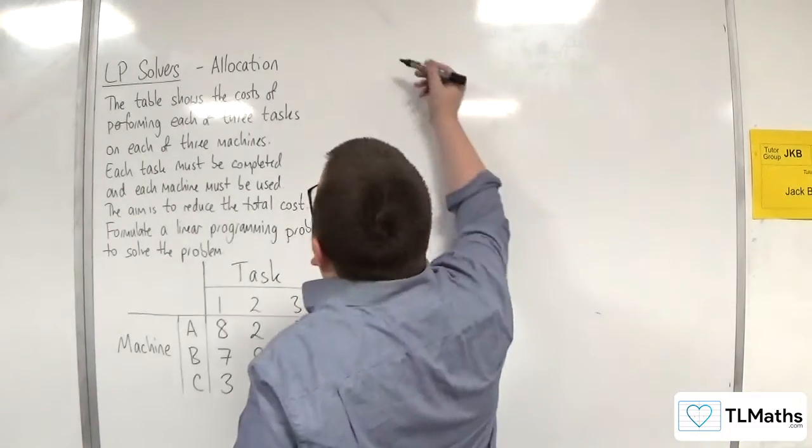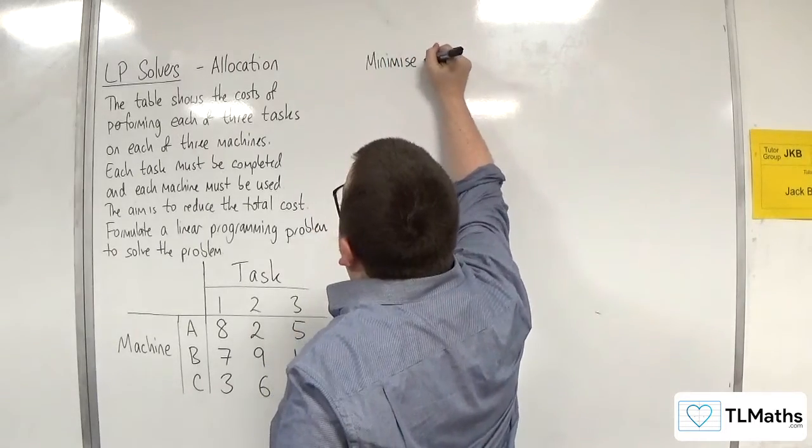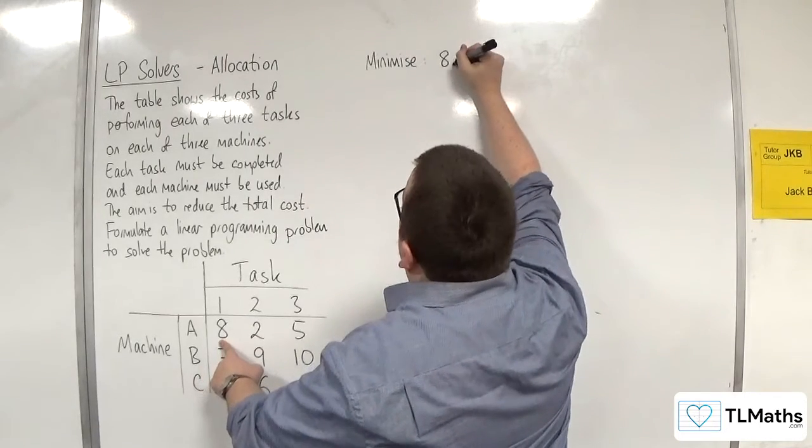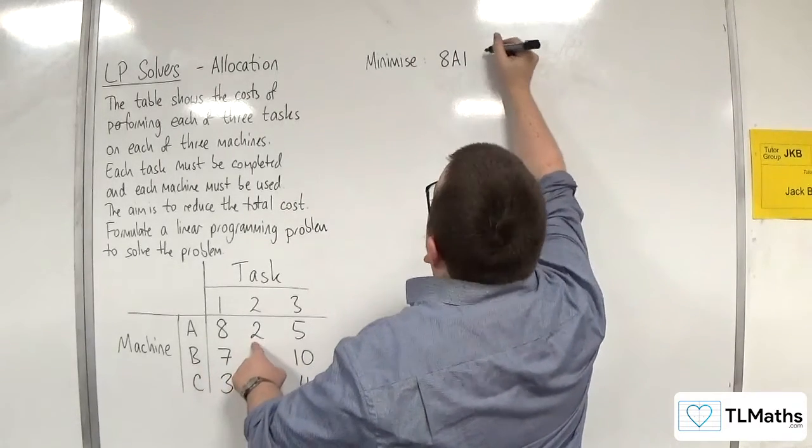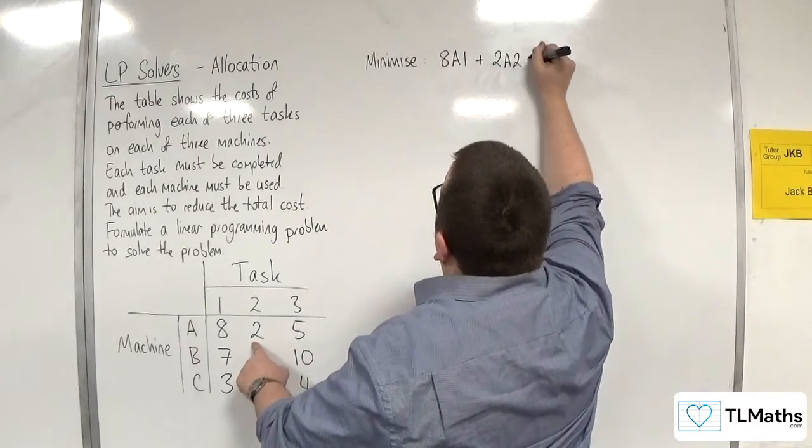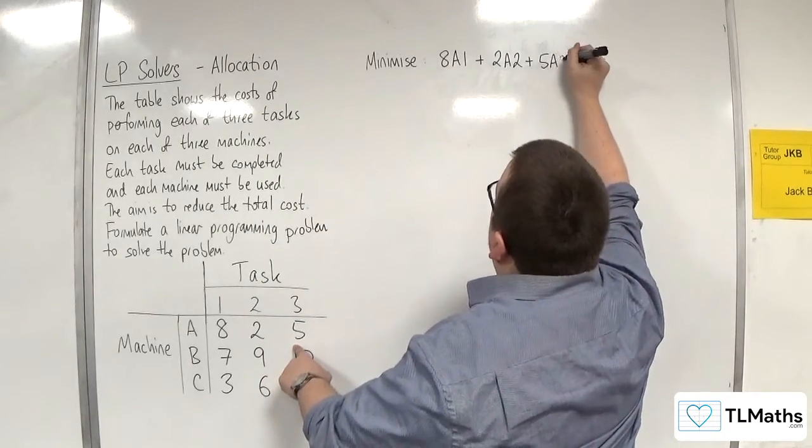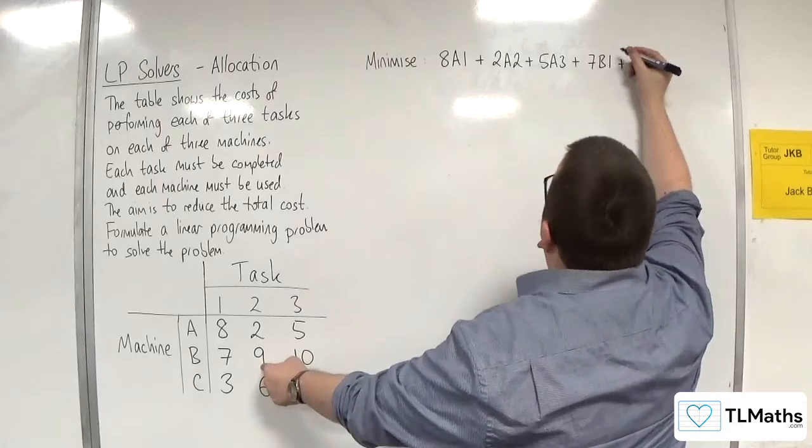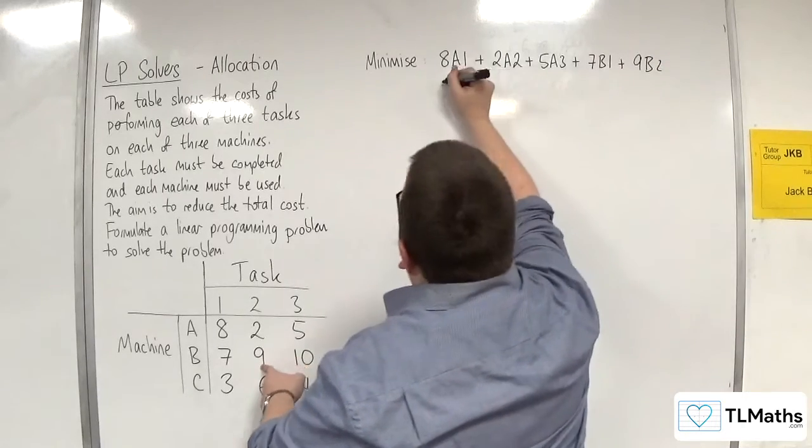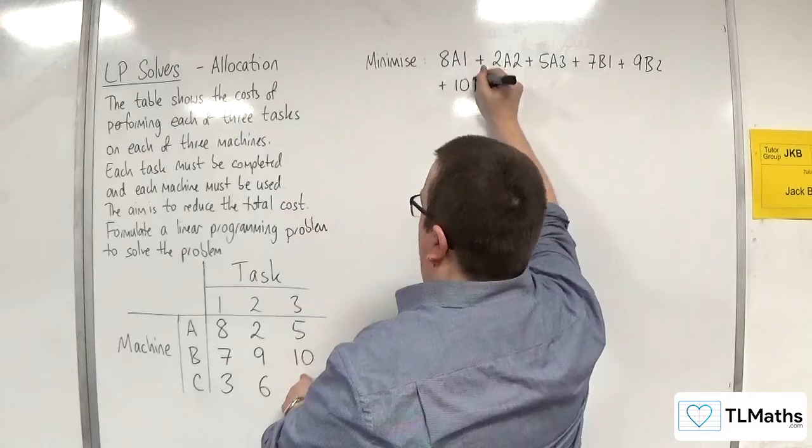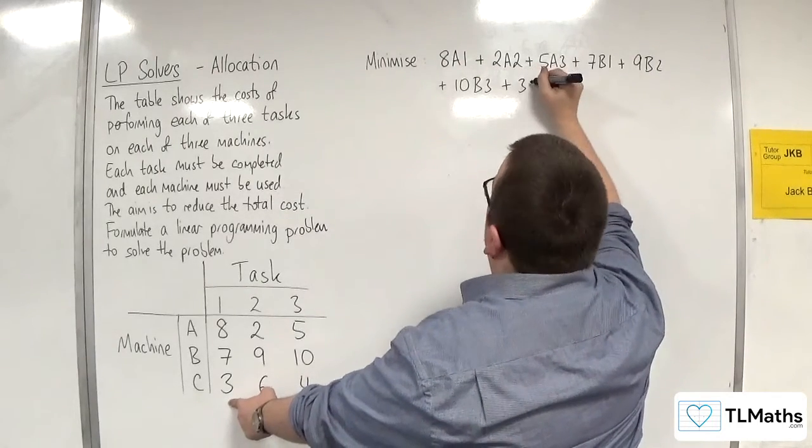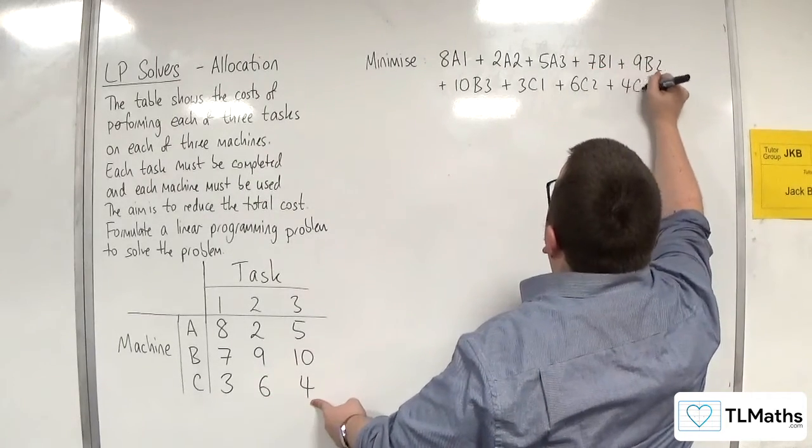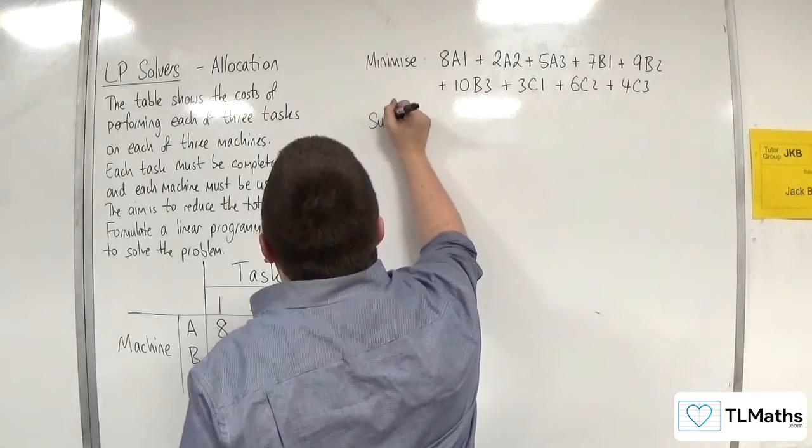So the objective function will be to minimise, because I want to minimise the cost, where each of the costs will be multiplied by the variable. So I have 8A1 + 2A2 + 5A3 + 7B1 + 9B2 + 10B3 + 3C1 + 6C2 + 4C3. So that is my objective function.